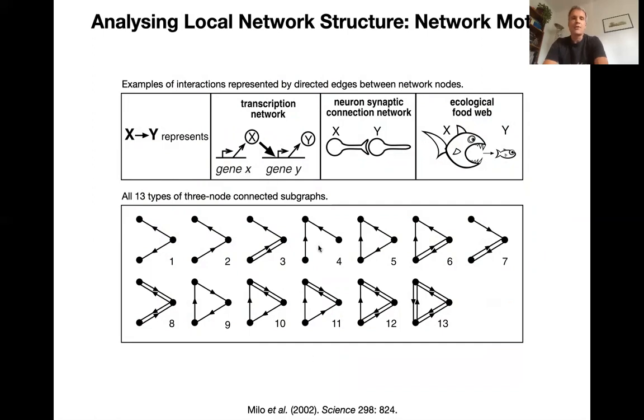And up here, they're telling you that these networks can stand for anything, transcriptional regulation, neuronal connections, or being eaten in a food web. It doesn't matter. So this is a very abstract analysis again. So you can take this set of subgraphs and say, let's look at all the different subsets of three nodes in my network and count how many times each of those 13 different types of subgraph occurs. And we're going to focus for what follows on this specific motive here, which is called the feed forward motive.